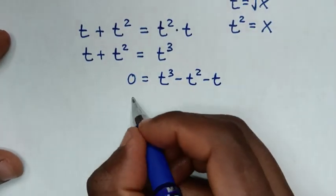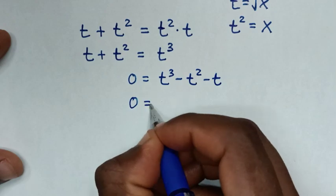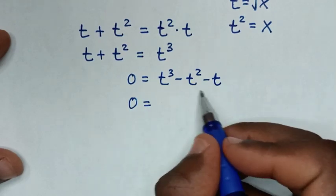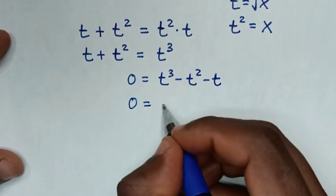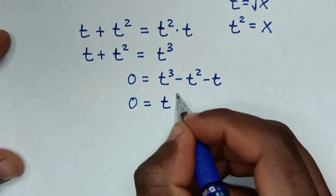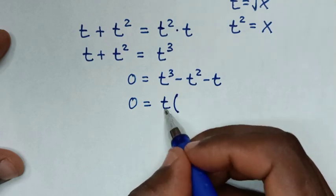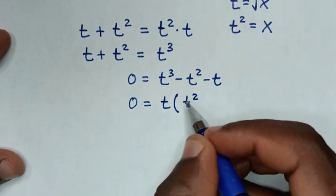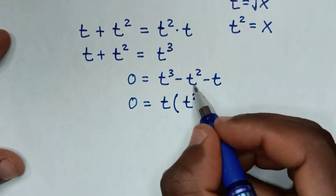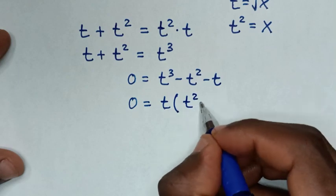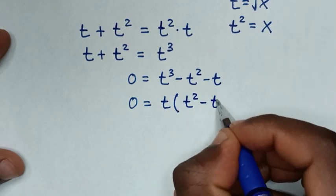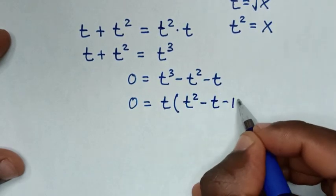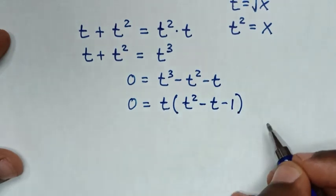Then, t is common in all terms, so we factor t out of the bracket. t cubed divided by t is t squared, negative t squared divided by t is negative t, and negative t divided by t is negative 1. So we get: 0 equals t times (t squared minus t minus 1).